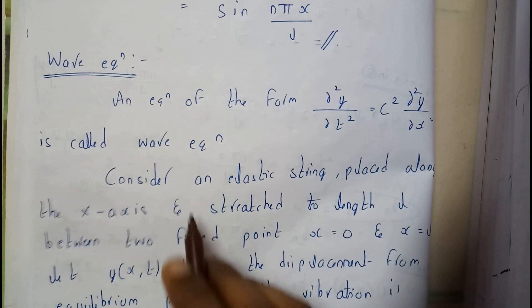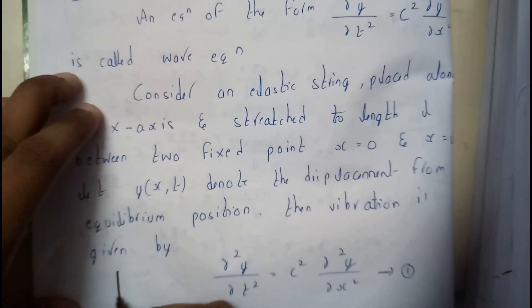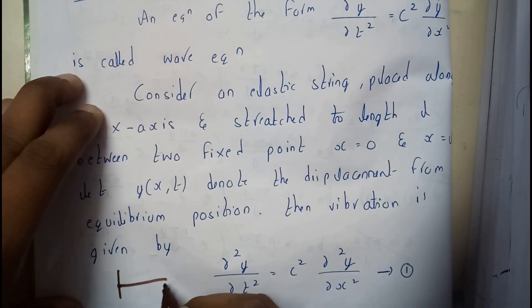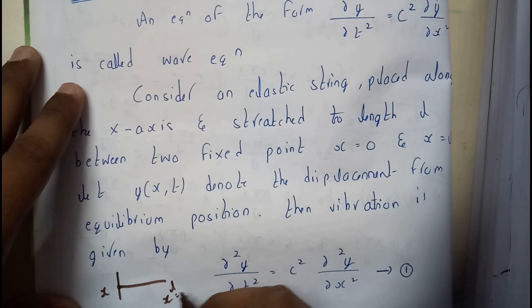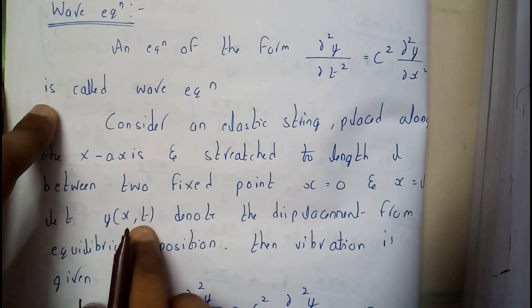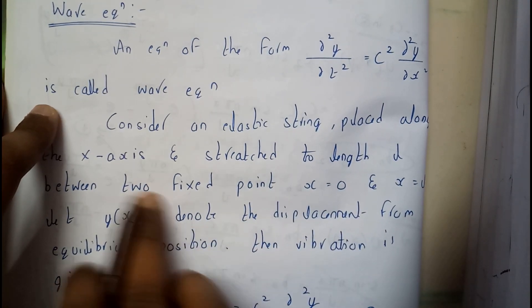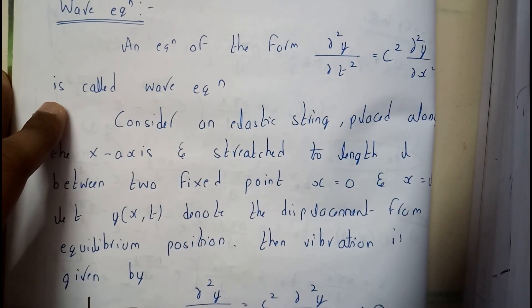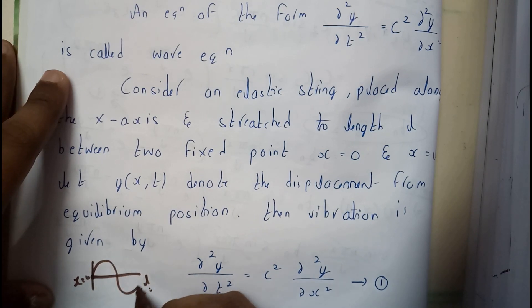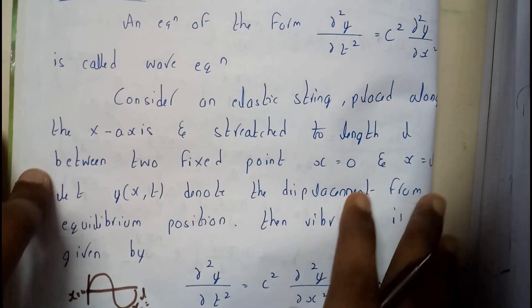Let us consider an elastic string placed along the x-axis, stretched to a length of L. Let us assume a fixed point — this is a string of length L. It starts at x = 0 and ends at x = L. Let y(x, t) denote the displacement from the equilibrium position. As we vibrate the string a bit upper or lower, we get a wave. That's the equation — I hope everyone has a small idea now.